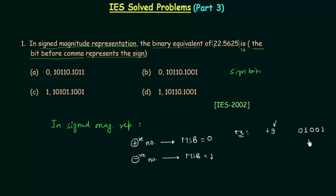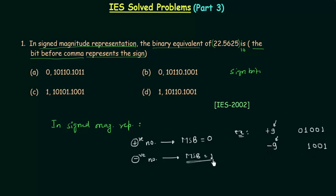This is how we represent +9 in signed magnitude representation. And if we want to represent -9, we do the same thing — first write down the magnitude 1001, and then to represent the minus sign we make the MSB equal to 1.